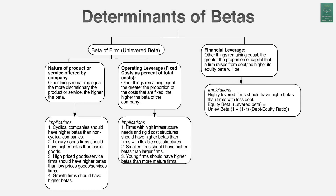The beta for a company does not come from a regression — it comes from three choices that company makes. First, what kind of business is it in? Here's the general rule: the more discretionary your product or service, the higher your beta will be. If your customers can live without your product, delay or defer buying it, you should have a higher beta than if you produce a necessity. A grocery store should have a lower beta than Tiffany's.